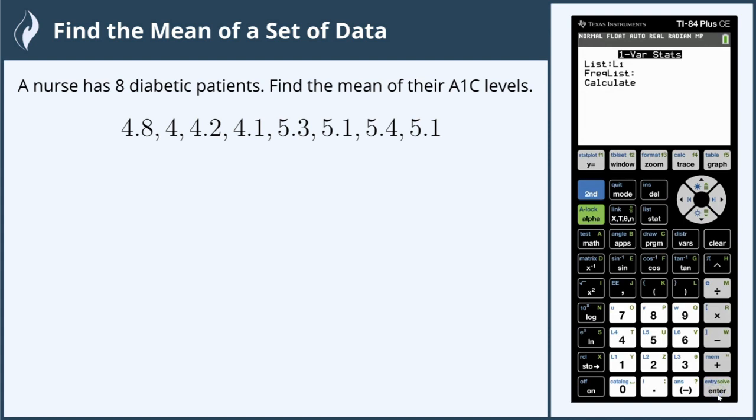We press enter. We have list one in our list. Everything has just a frequency of one, so we don't have a frequency list. We just arrow down to calculate and press enter. Here are our values.